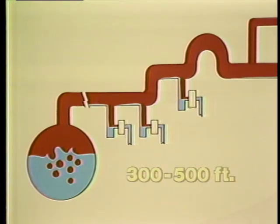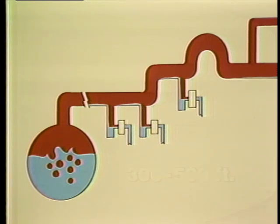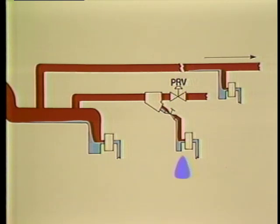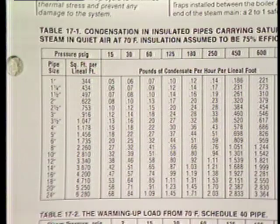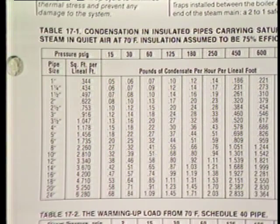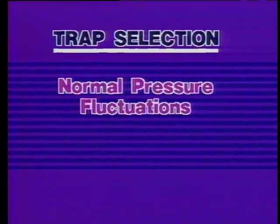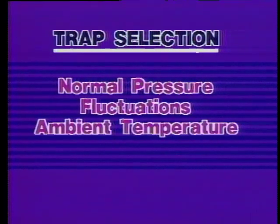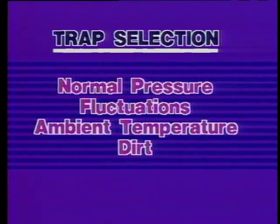Steam mains should be dripped every 300 to 500 feet. Also, install drip traps immediately ahead of risers, expansion loops, pressure reducing valves and temperature regulators, at the end of steam mains, and on long runs of branch lines. Select a trap based on the calculated condensate load, not on the pipe connection size. Other considerations in trap selection are normal steam pressure, fluctuations in pressure, ambient temperatures, and the likelihood of dirt in the system.